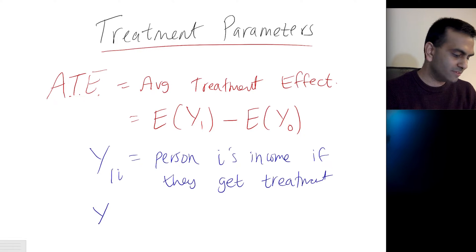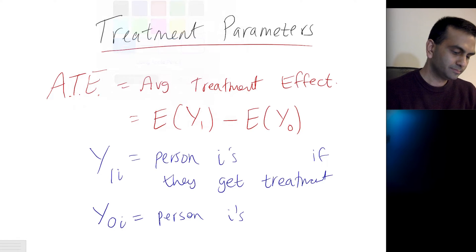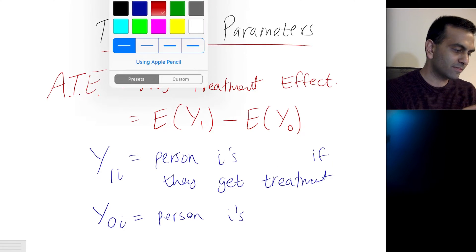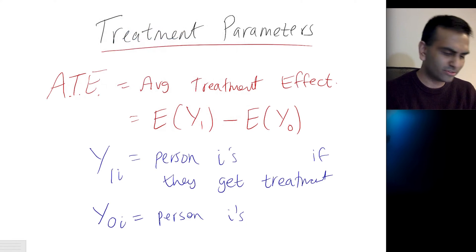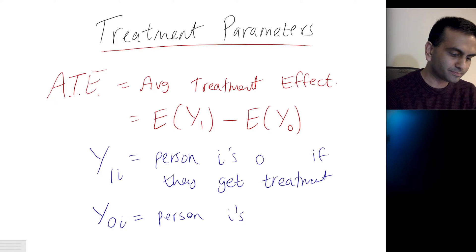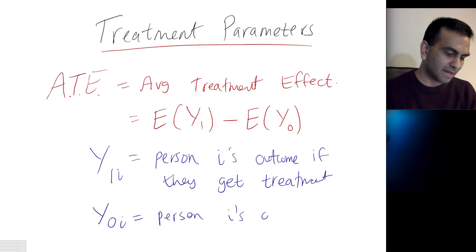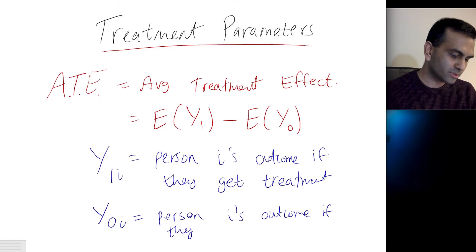Y0 for person i is person i's outcome — whatever your outcome variable is for the research question you're asking, whether days since your cold goes away, or income — the outcome or response variable, for person i if they don't get the treatment.